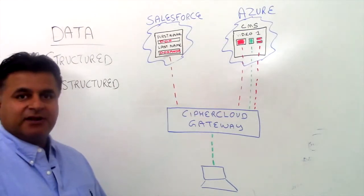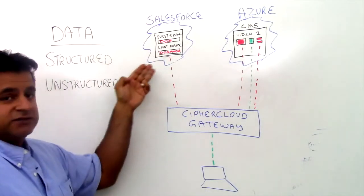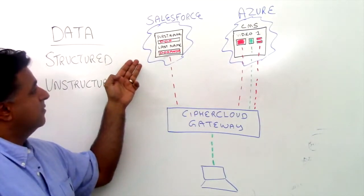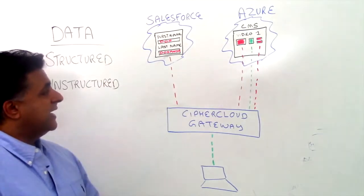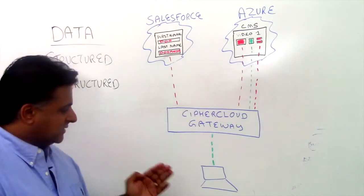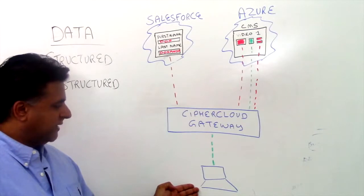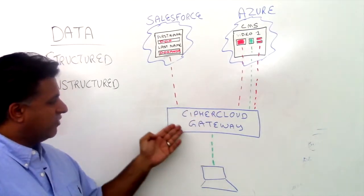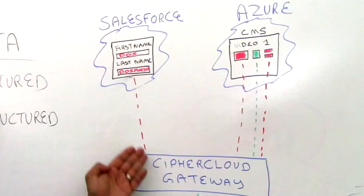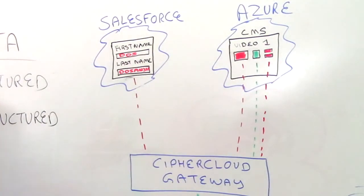I've taken the liberty of using the example of a first name and a last name in a Salesforce form. In this example, the structured data is my name — Das is the first name and Dosanj the last name. As a person on the enterprise premise goes to the Salesforce page, they'll look at or enter that value, and it gets encrypted at our gateway and then sent to the Salesforce page where it is now in ciphertext. That is what we reference as structured data.